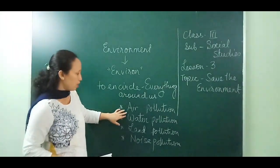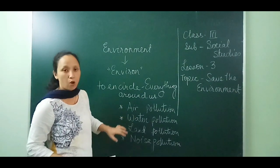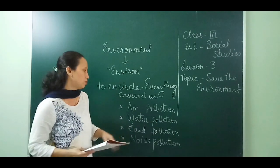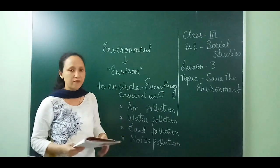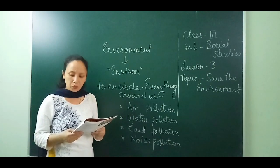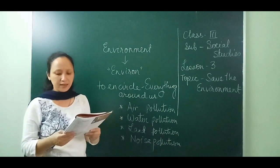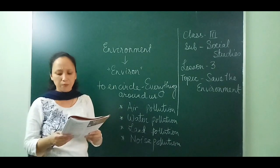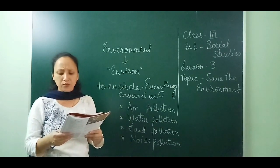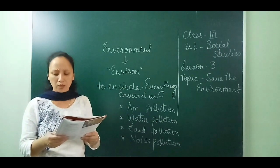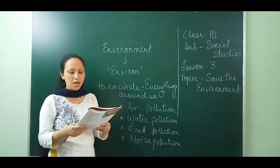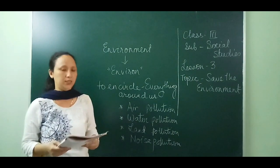The second type of pollution is water pollution. Water is such an important, inherent part of life. We need water to drink, bathe, cook, wash clothes, grow crops, and clean things. Plants and animals also need water. Water is used to generate electricity. There can be no life without water.